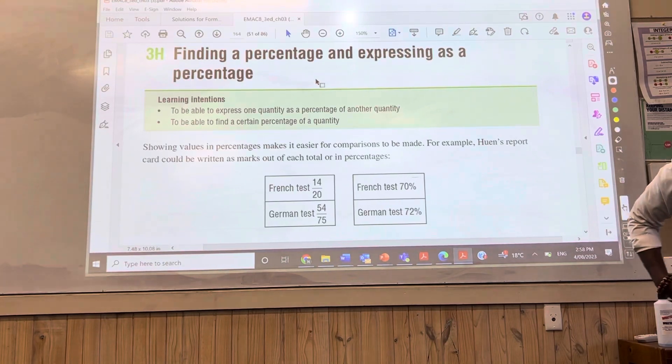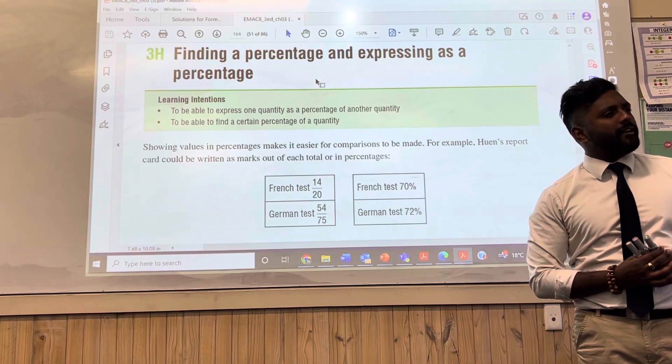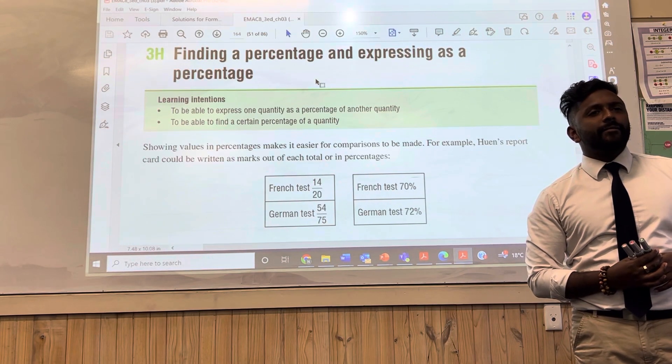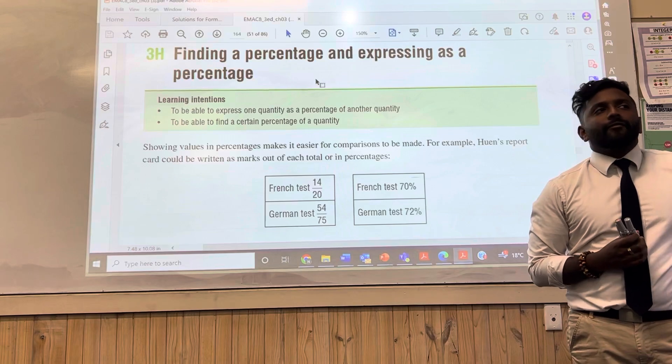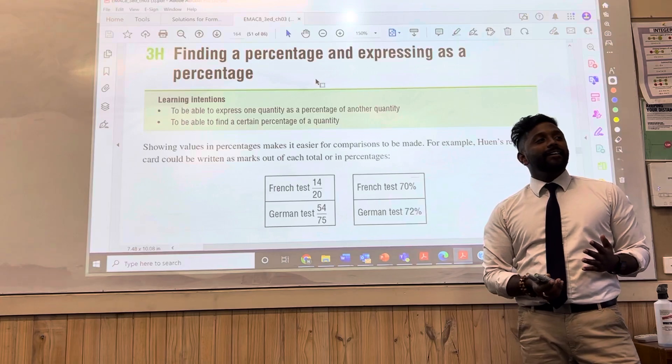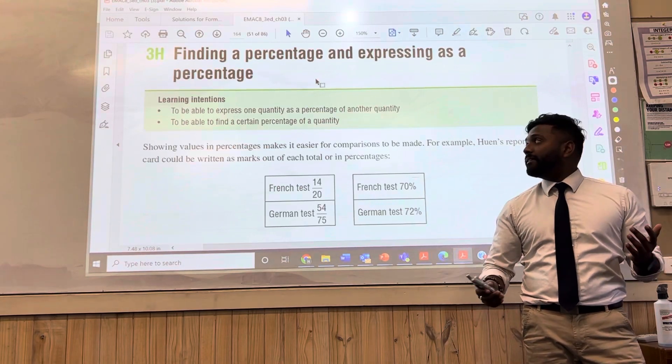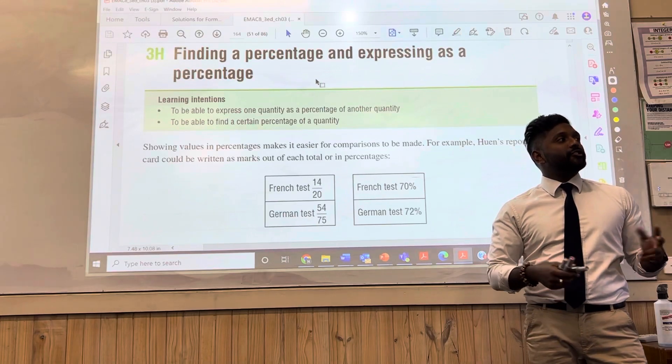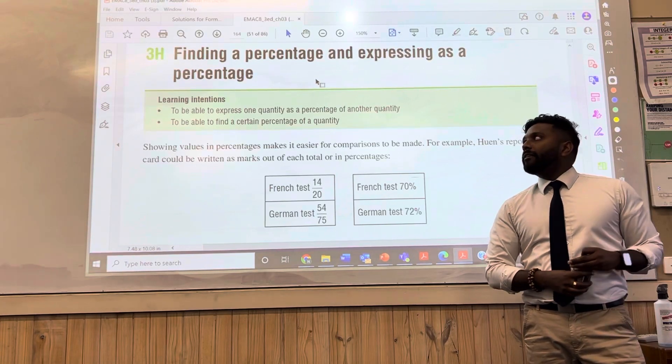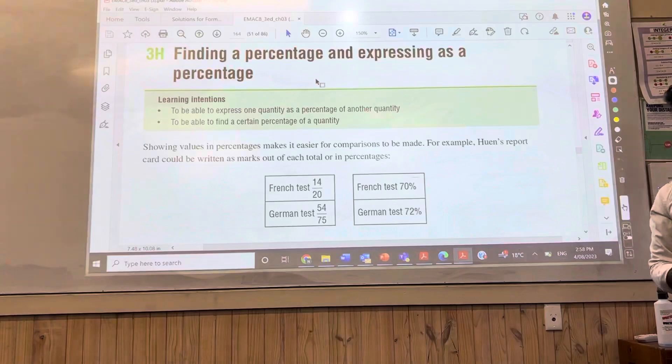So in maths, sometimes going back over things you've done incorrectly, it's not such a nice thing. If you've got something wrong, I know for myself I don't want to go over something that I'm not happy about. But going over it is really, really crucial. That is what we call reflection. The next part is 3H, which is all about finding a percentage and expressing it as a percentage.